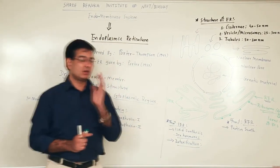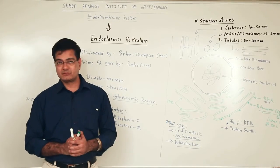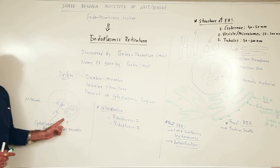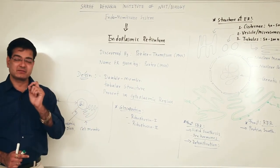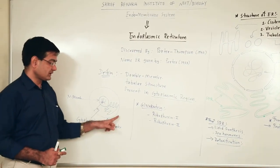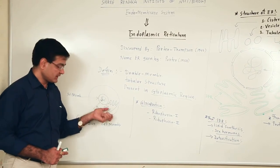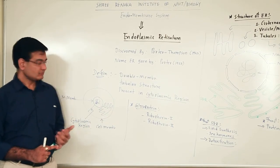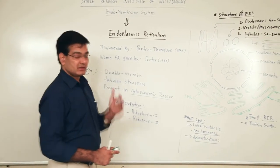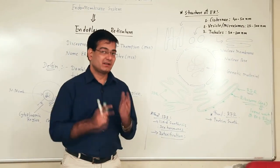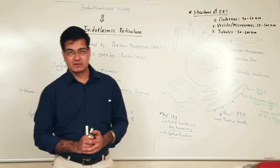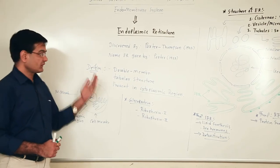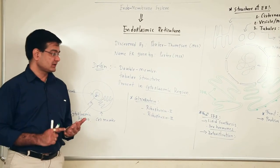The common functions of the endoplasmic reticulum: this network-like structure extending inside the cytoplasmic region also helps in the transport of substances within the cell. Some substances move from the nucleus towards the outside or from outside to the nucleus, and this passage for transport is facilitated by the endoplasmic reticulum. In some cases, it also acts as an endoskeleton of the cell, helping the cell to withstand pressure exerted on it.